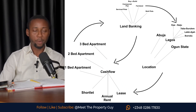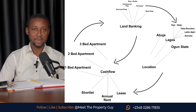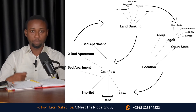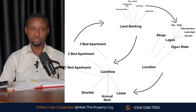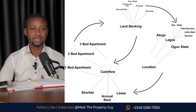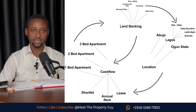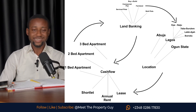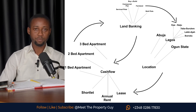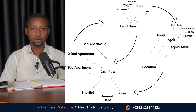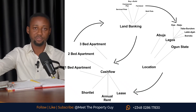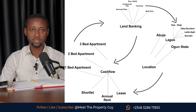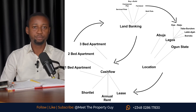Now the third level is repurposing. Repurposing is where we convert a particular real estate asset to a different objective so you continue making profit. For example, you bought land for residential land banking, and the value has gone from 16.5 million to 120 million in five years. Now you can repurpose — build and sell, or do a joint venture: find a developer, they build on your land, and you split the profits.